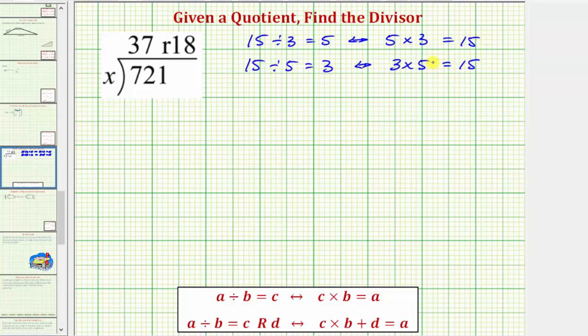Now let's look at a quotient with a remainder. a divided by b equals c with the remainder of d, if and only if c times b plus d the remainder equals a.